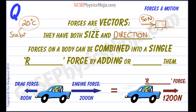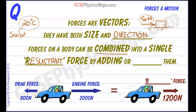Forces are vectors — they have both size and direction. Forces on a body can be combined into a single resultant force, which achieves the same thing as the forces that have been combined. That resultant force can be found by adding or subtracting the forces on a body.